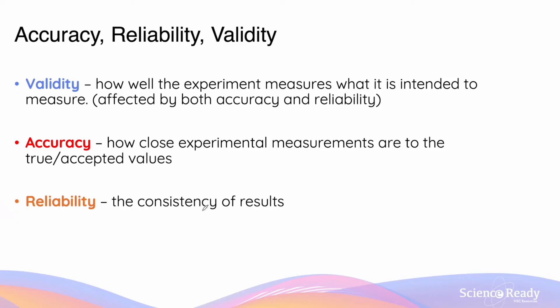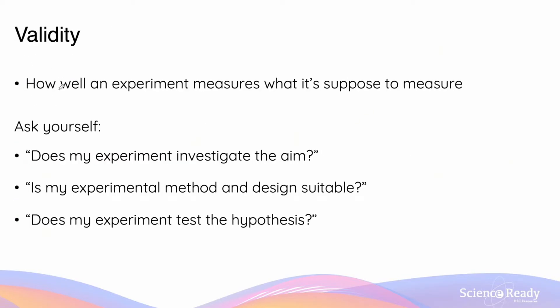There are nuances behind each of these terms, so we'll delve into them in much more detail throughout the video. Validity is defined as how well an experiment measures what it's supposed to measure. When assessing validity, you should ask yourself: does my experiment actually address or investigate the aim of the experiment?